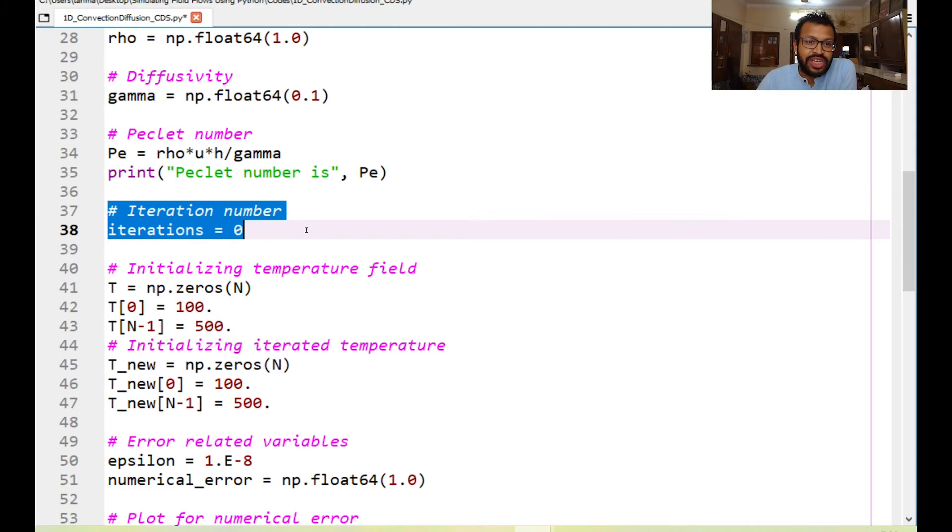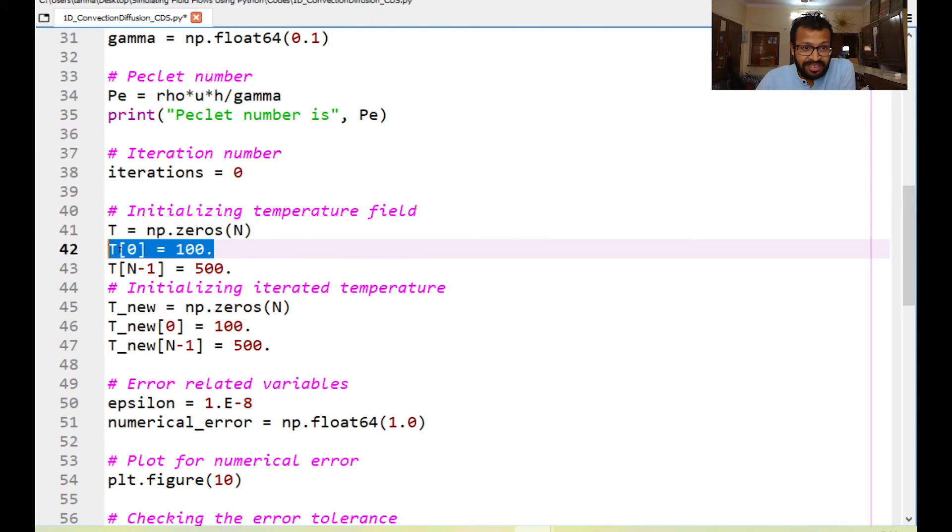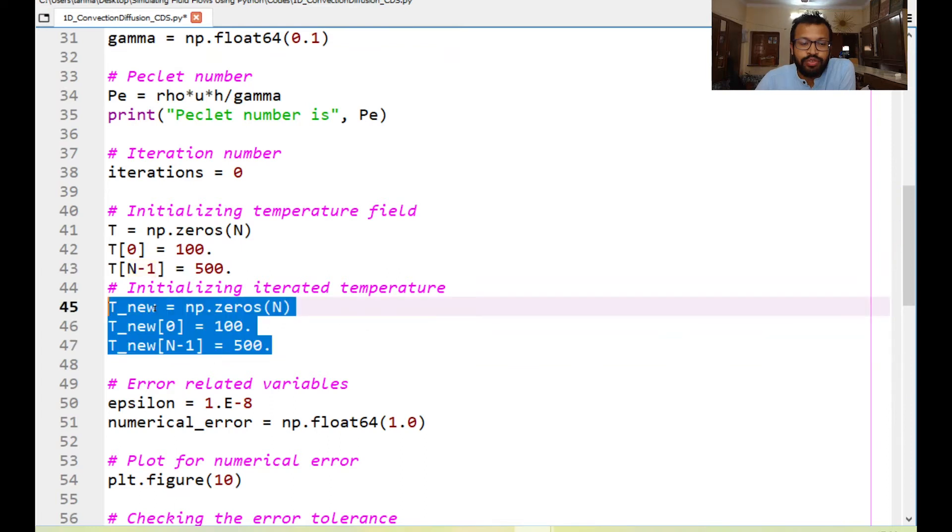Following this we initialize the temperature field. So we were given the boundary condition of 100 Kelvin at the left boundary and 500 Kelvin at the right boundary. So correspondingly we have indices of 0 for the left node and n-1 for the right node and this is exactly copied and pasted for the T new variable that is used for the updated value of temperature.